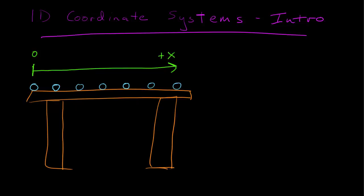I have a positive x in the direction of my arrow, and I've located where the zero is. This is our ruler, and it measures things in units of length — I'll say this is in centimeters, though of course it could be anything. Since I'm making it up, I can say what these distances are: that's 10 centimeters, there's 20, there's 30, 40, and 50.